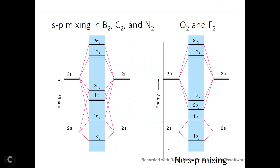Let's look at some other homonuclear diatomic molecules: B₂, C₂, N₂, O₂, and F₂. It's actually easier to look at O₂ and F₂ first. When the six P orbitals interact, there's a so-called SP mixing in boron-2, carbon-2, and nitrogen-2 that messes up the MO diagram. In O₂ and F₂, there's no SP mixing, so it's neat — the molecular orbitals are almost symmetrical. Imagine a center: you have pi bonding and pi anti-bonding, sigma bonding and sigma anti-bonding surrounding the center, which is just the energy of the atomic orbitals.